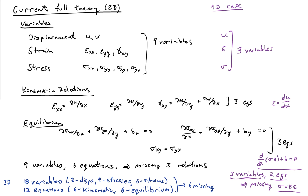And there are 12 equations in terms of the kinematics, namely there are six kinematic equations and six equilibrium equations. So there are six missing equations in the 3D case. So in the 3D case, we're going to need six constitutive equations to complete the theory.